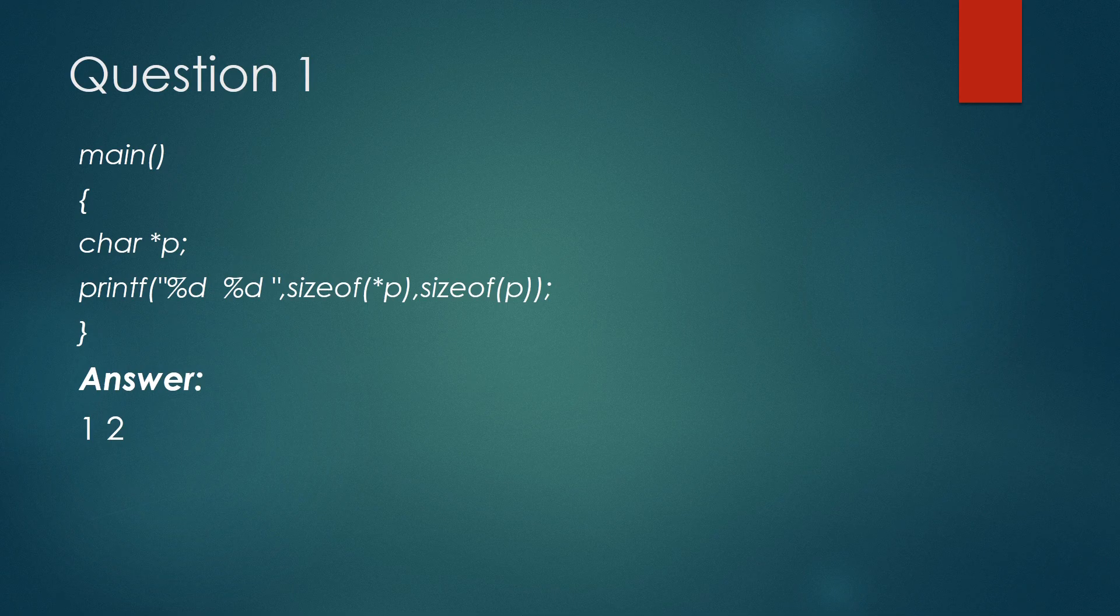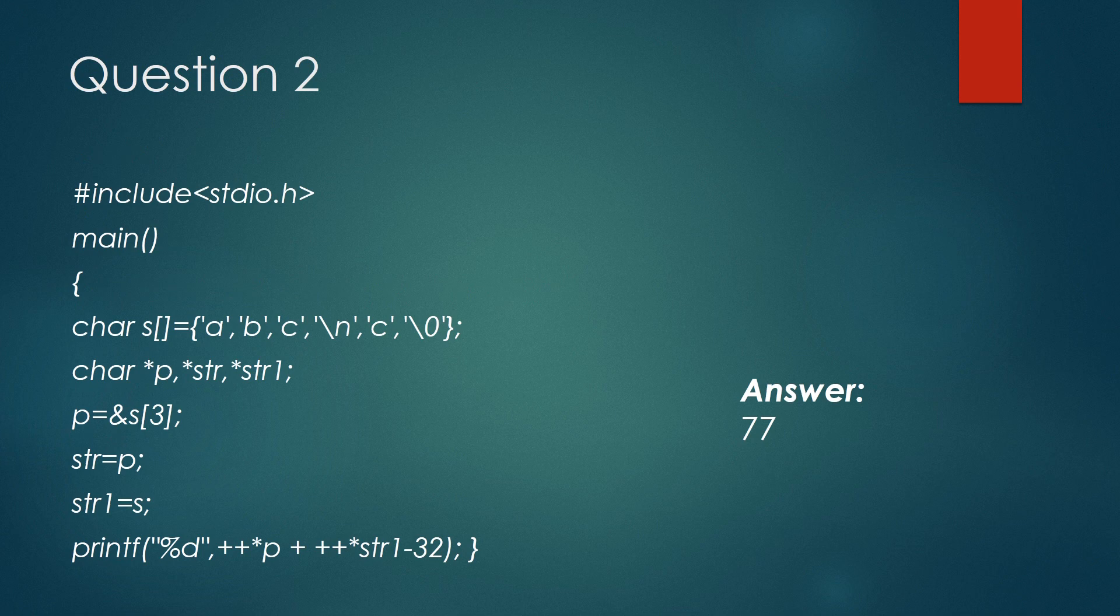So P is a character pointer which needs one byte for storing its value, which is nothing but a character. Hence, sizeof(*P) gives a value of one. And since it needs two bytes to store the address of the character pointer, sizeof(P) gives two bytes. Here, one thing is important: sizeof(P) is compiler dependent.